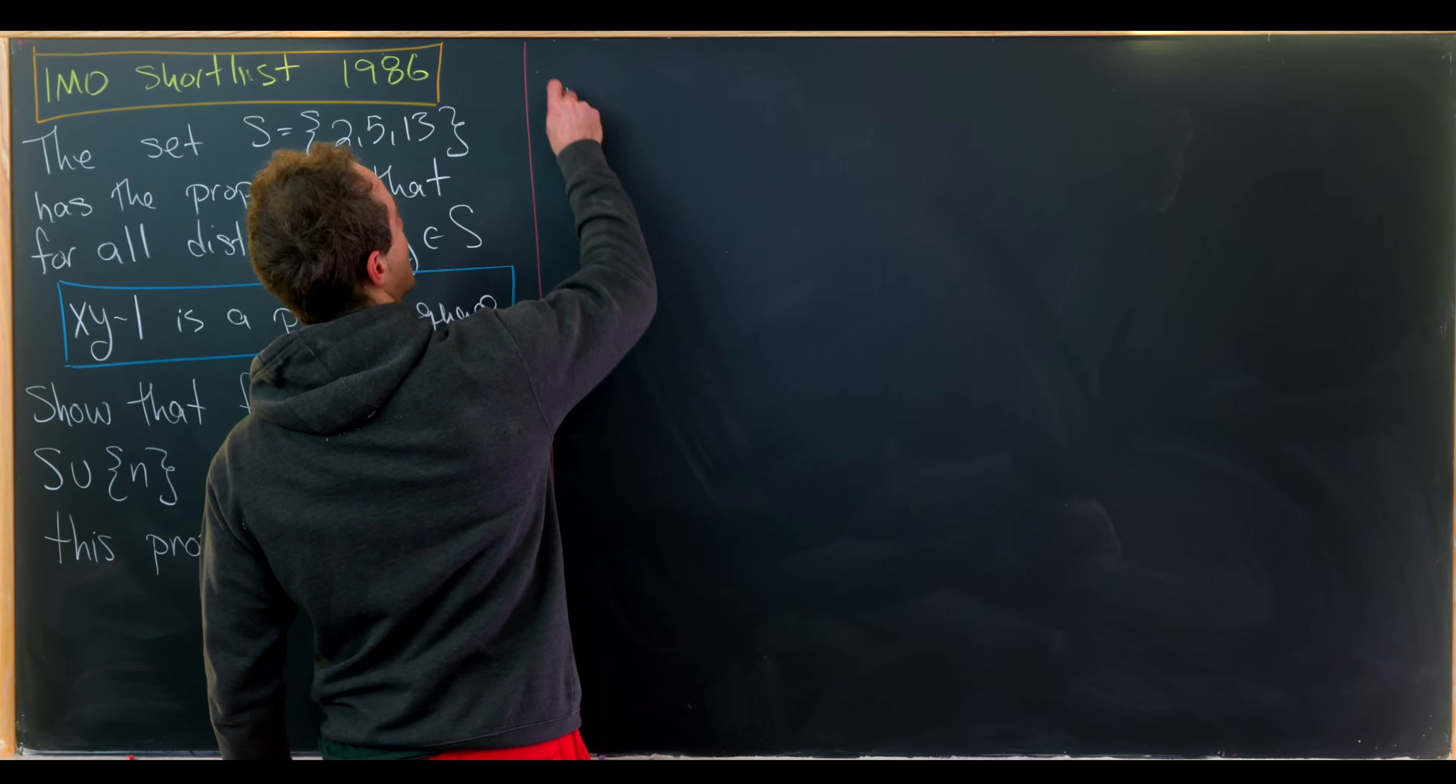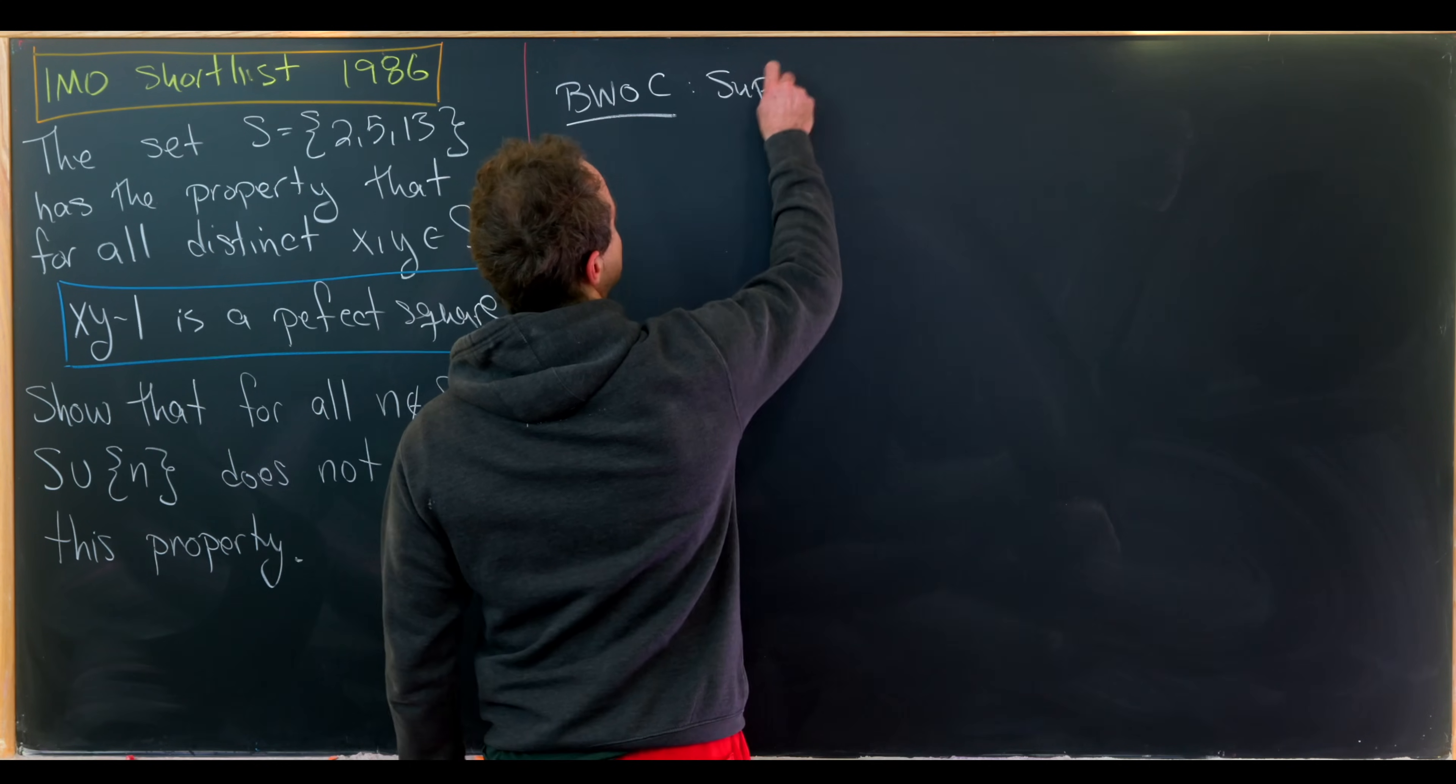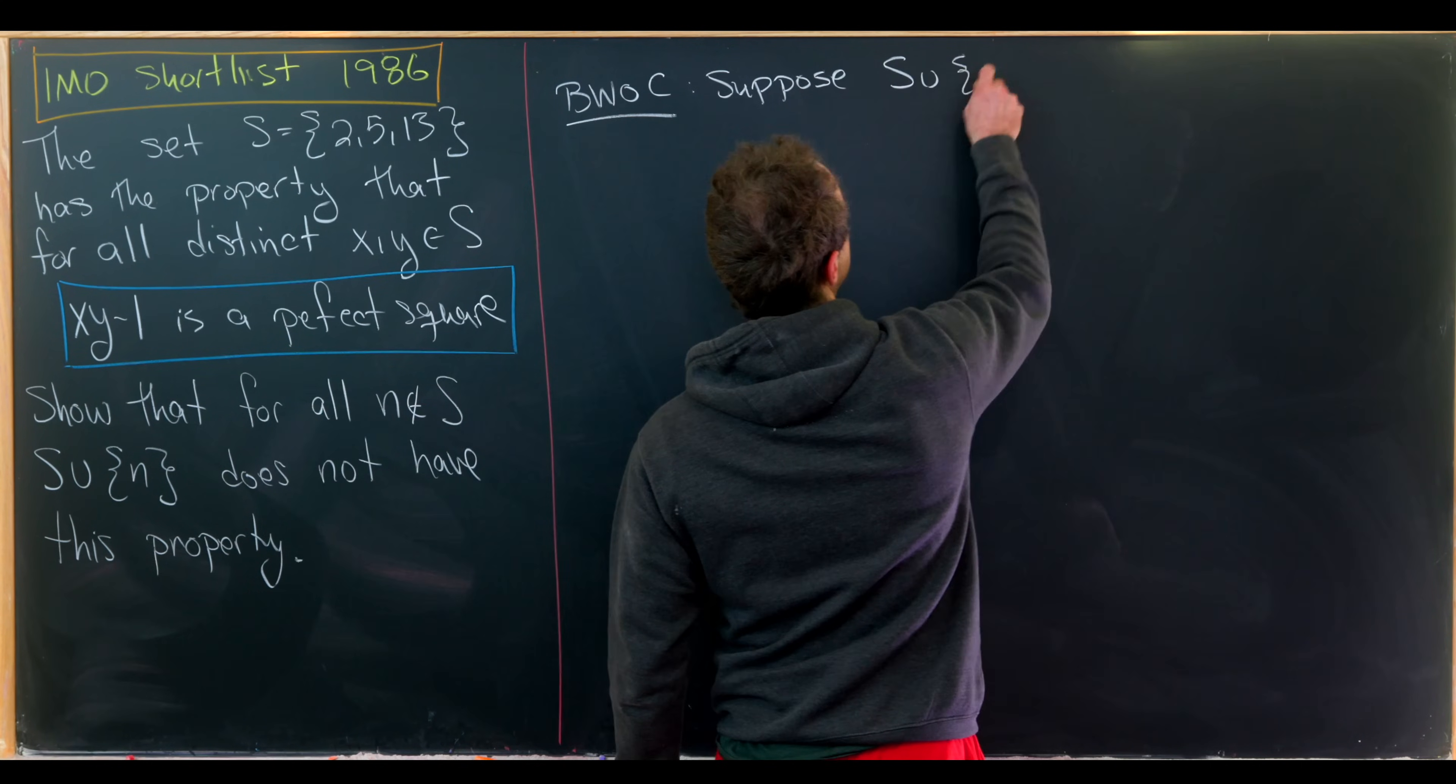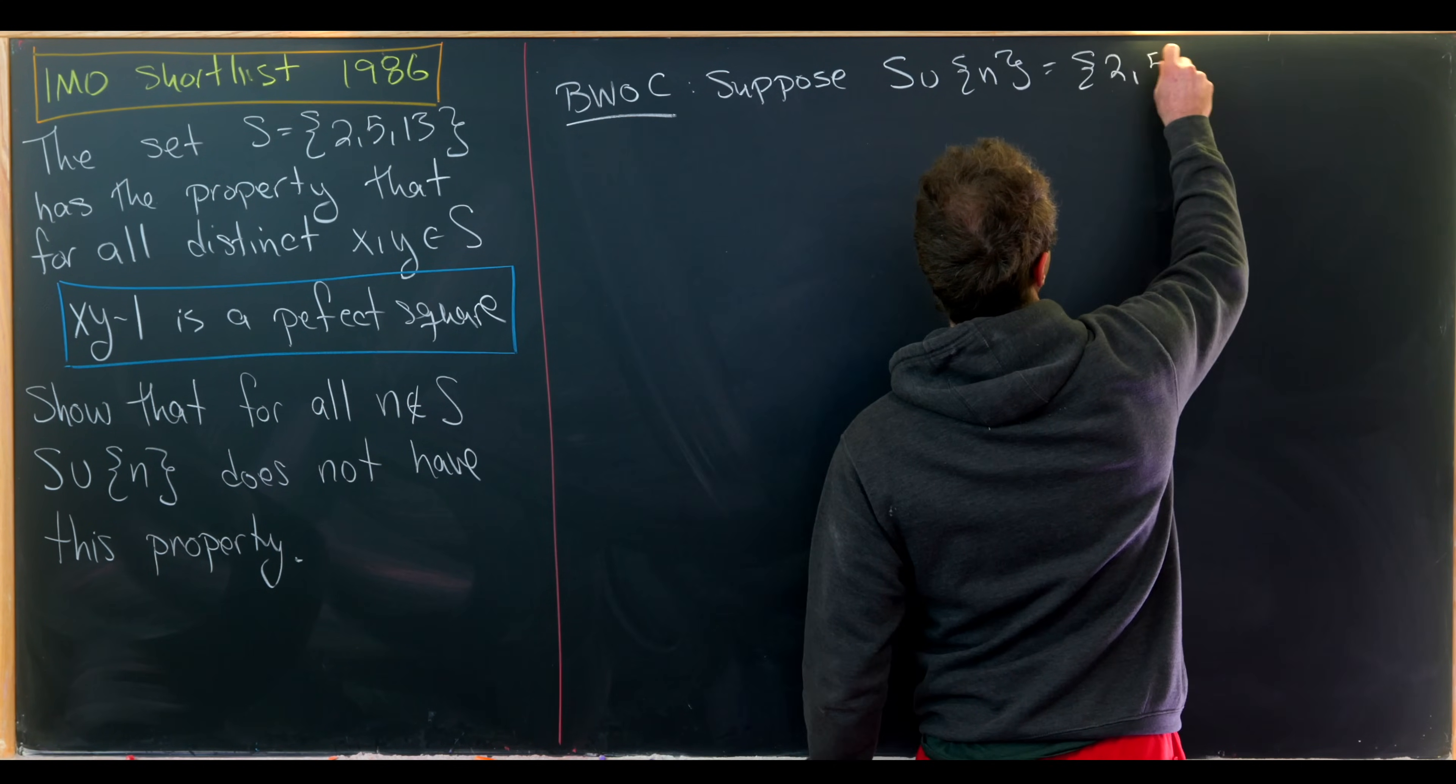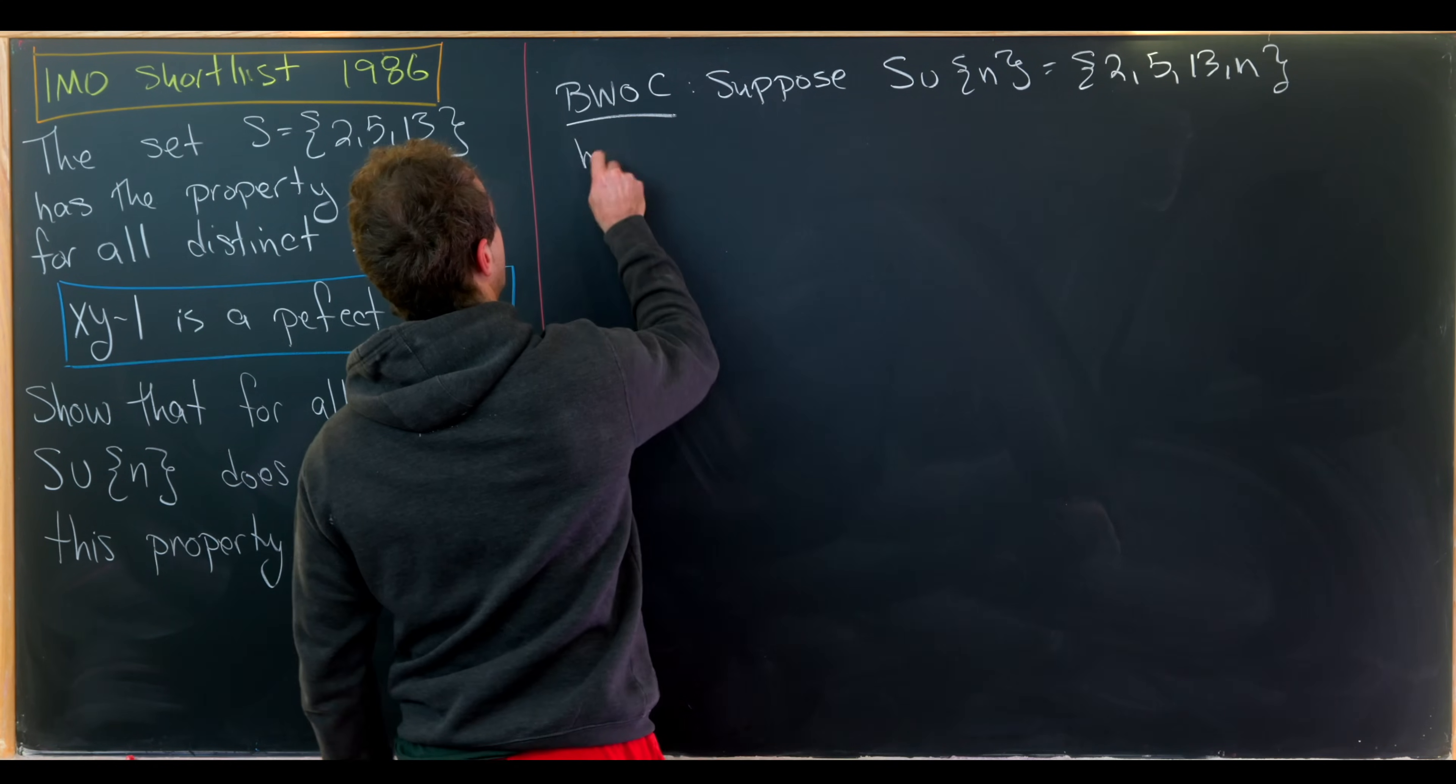And we'll do this by way of contradiction. So by way of contradiction, let's suppose that our new set S union n, which we can write as 2, 5, 13, n, has this property.